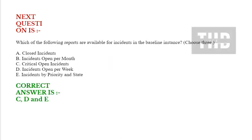Question: Which of the following reports are available for incidents in the baseline instance? Choose three options. Option A: Closed incidents. Option B: Incidents open per month. Option C: Critical open incidents. Option D: Incidents open per week. Option E: Incidents by priority and state. Correct answer is option C, D, and E.